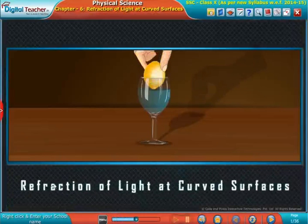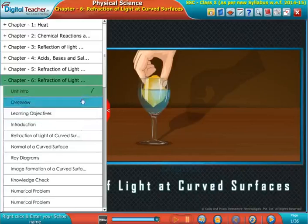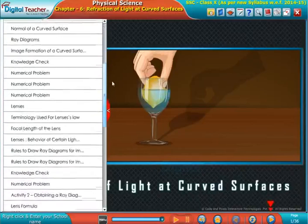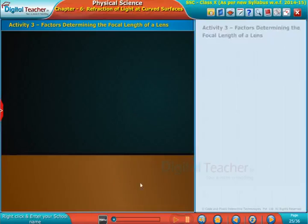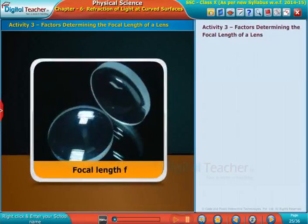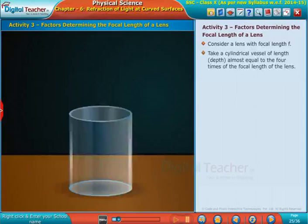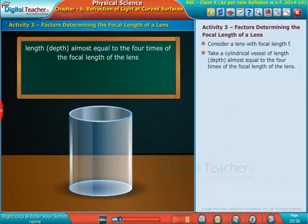Welcome to the chapter refraction of light at curved surfaces. Let us perform an activity for factors determining the focal length of a lens. Consider a lens with focal length f. Take a cylindrical vessel of length depth almost equal to the fourth times of the focal length of the lens.